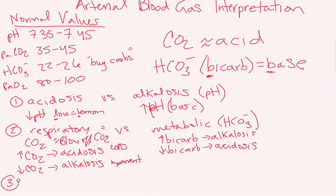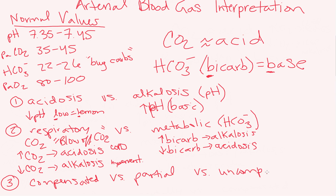The third thing we look at is whether the ABG is compensated, partially compensated, or uncompensated. In most cases, something will cause an acidosis or alkalosis and it'll start out uncompensated. As your body realizes what's going on, if it's able to, it will start compensating — becoming partially compensated, and then ultimately fully compensated. When it's compensated, it will have a corrected pH — that's how you know it's compensated.